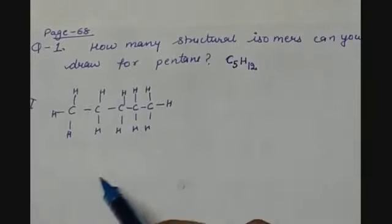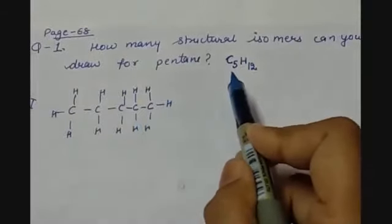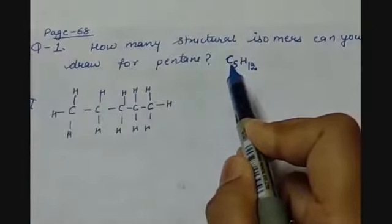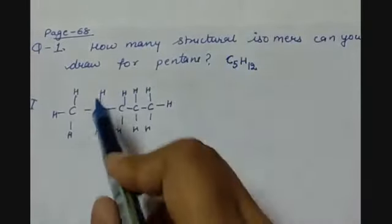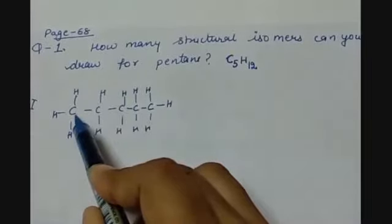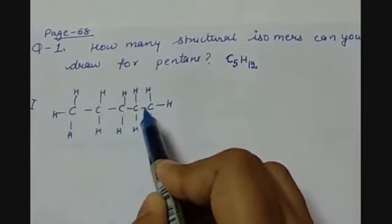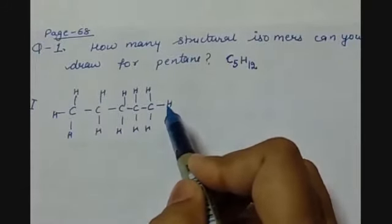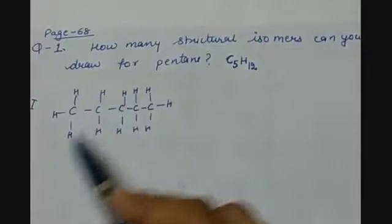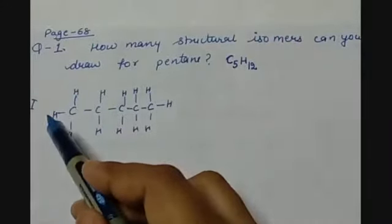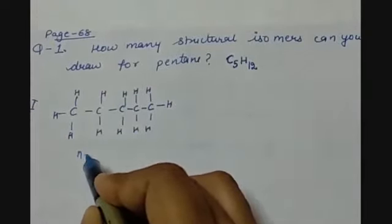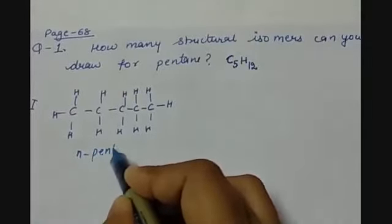We have to draw the isomers for pentane with formula C5H12. Pentane has 5 carbon atoms whose valencies are completed by hydrogen, a monovalent atom. We are using 12 hydrogens and 5 carbon atoms. This structure is called n-pentane, that is normal pentane.